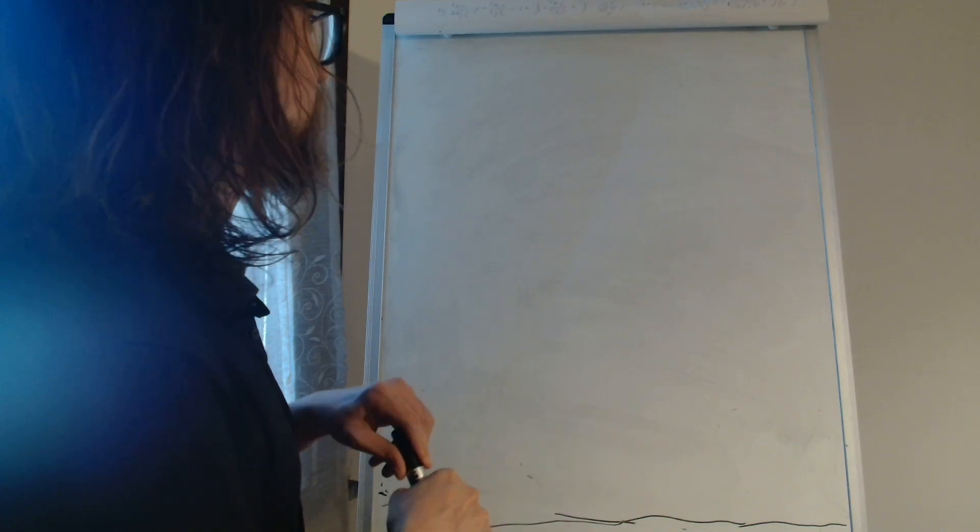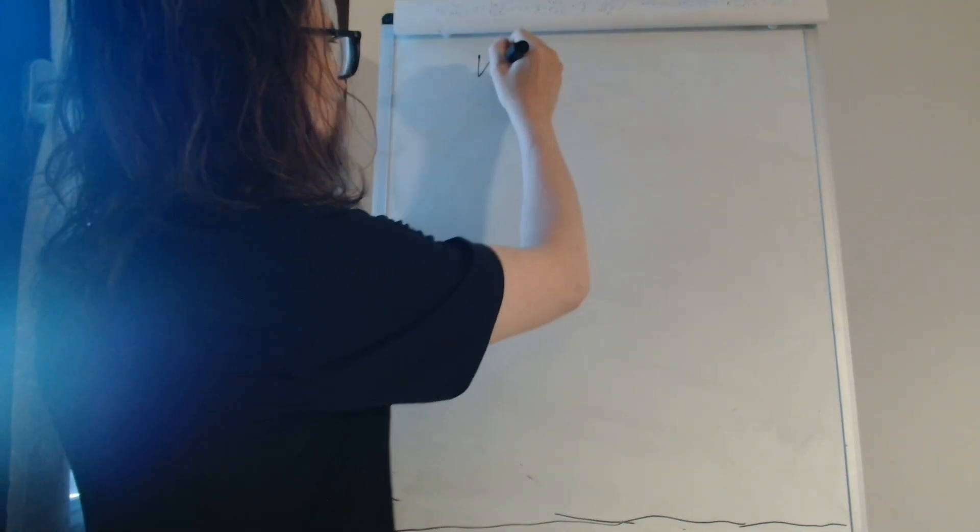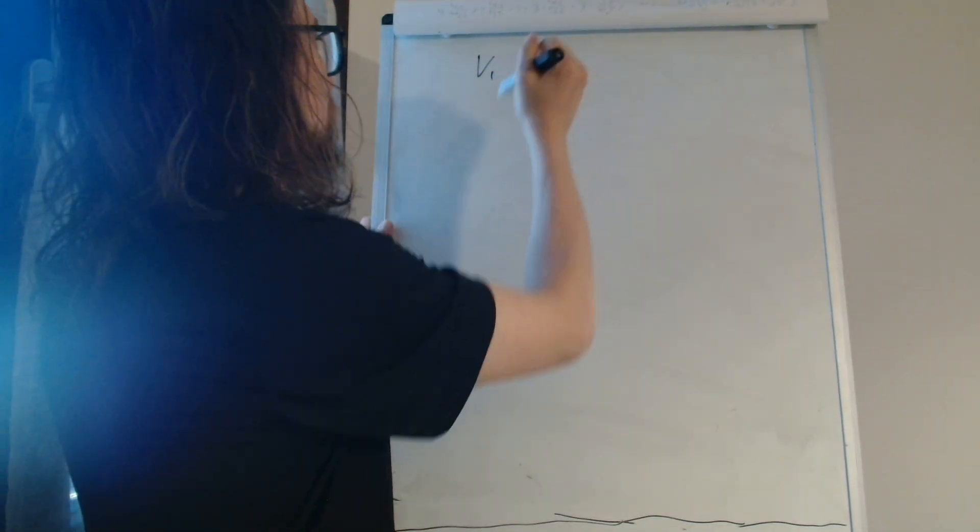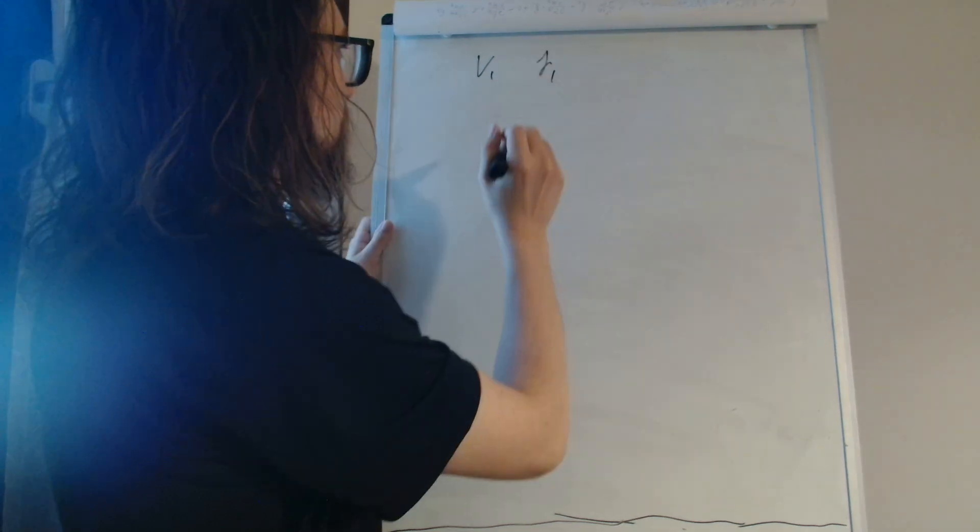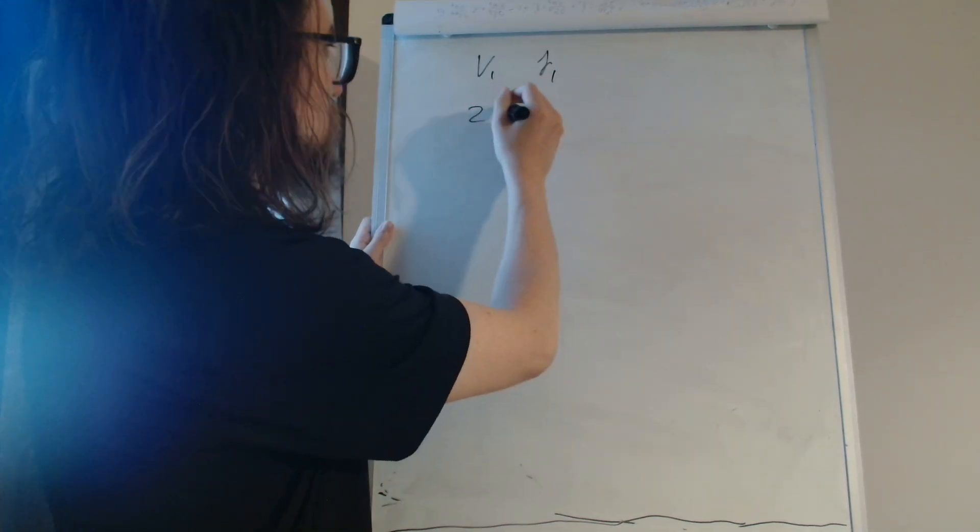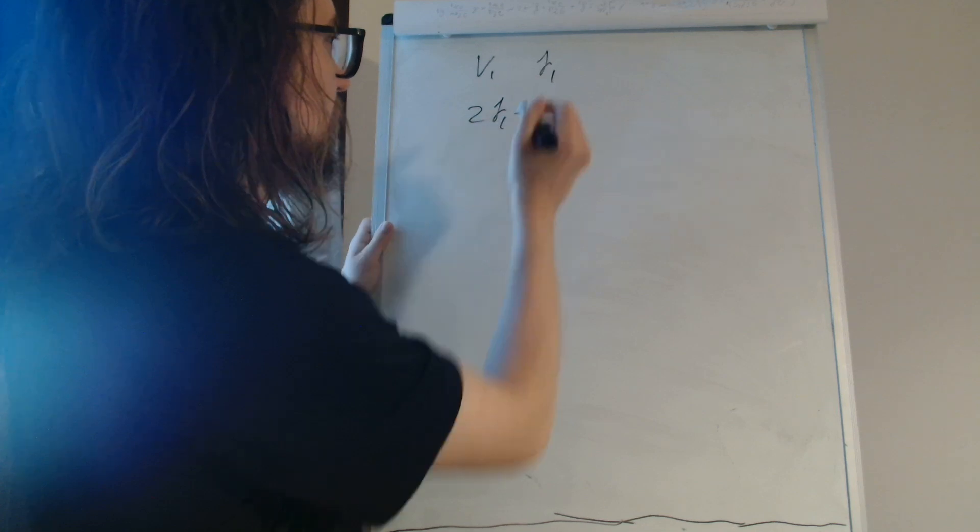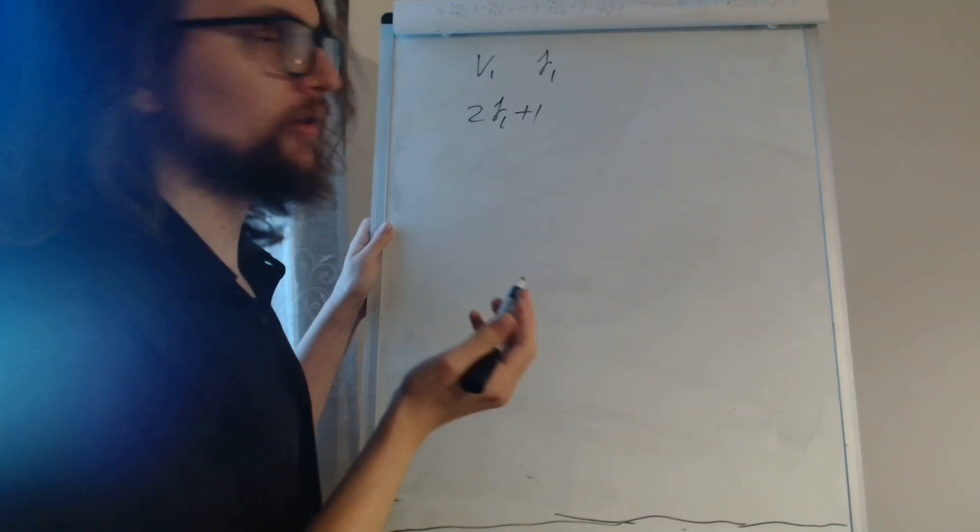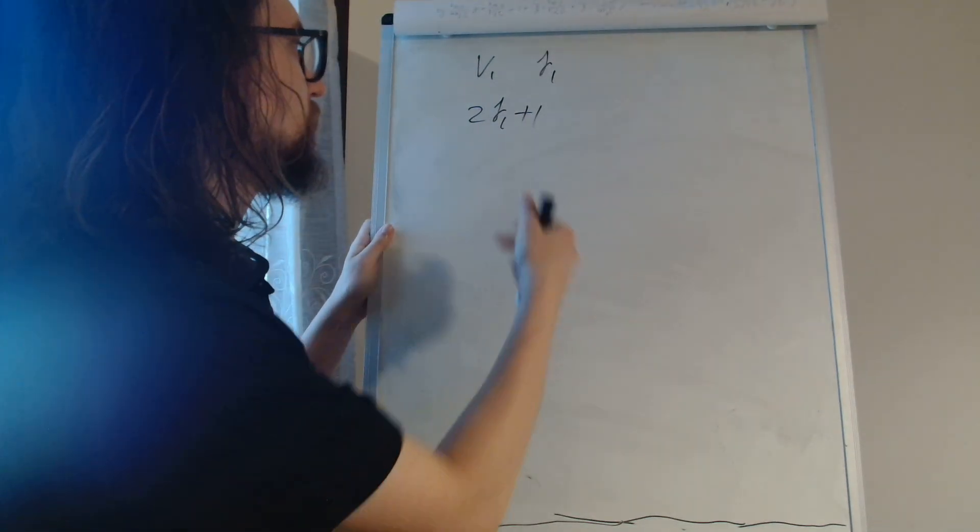Let's say we have a system V1 of angular momentum J1. It has dimension 2J1 plus 1, and we can take a basis for this system which has 2J1 plus 1 independent elements.